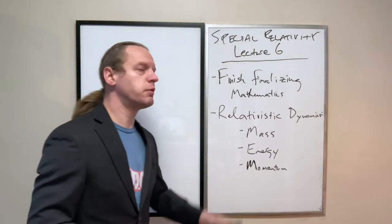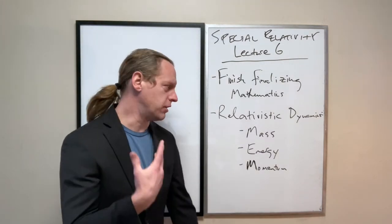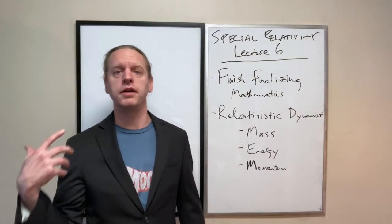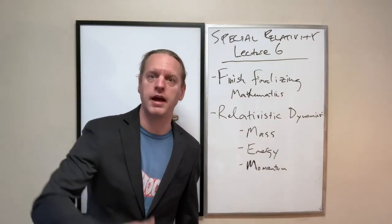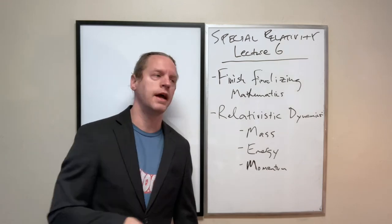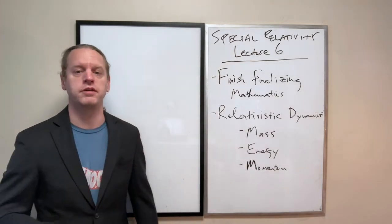And then we're getting on to relativistic dynamics here, which is basically not just transforming velocities, but now looking at energies and mass and momentum. And this is where we get that famous E equals MC squared result.